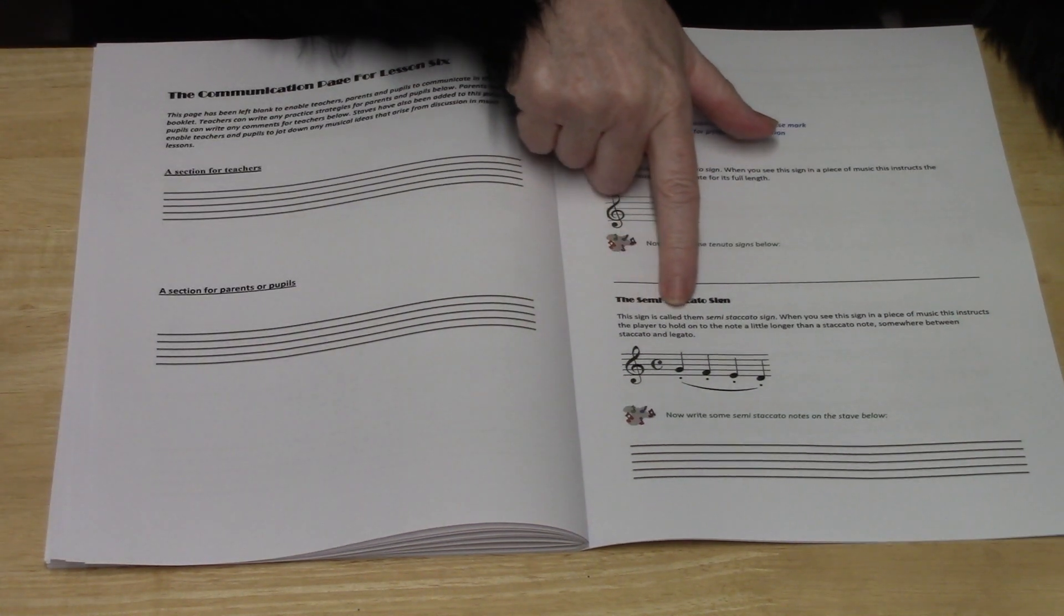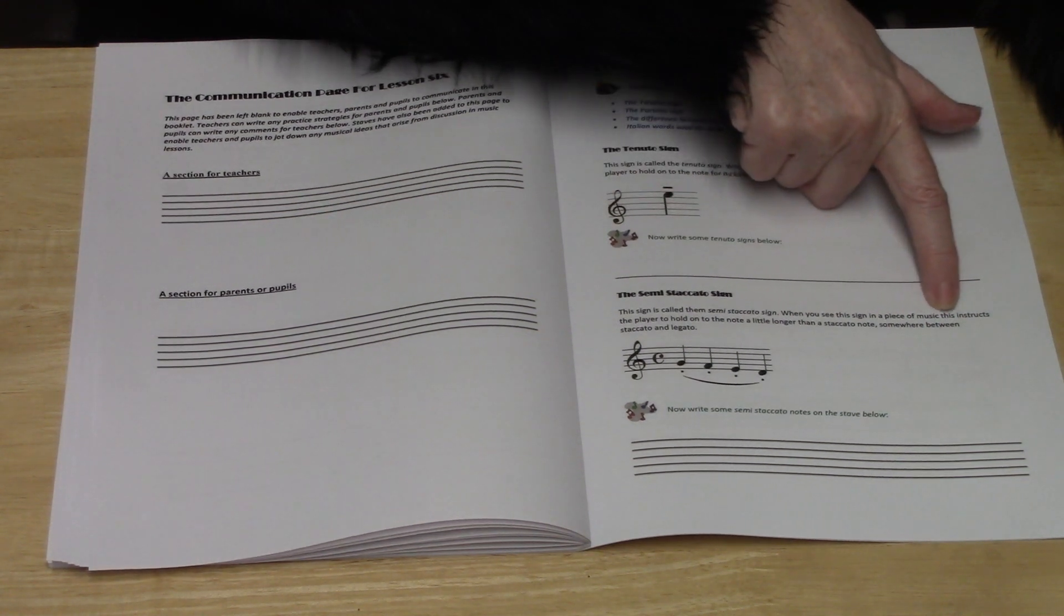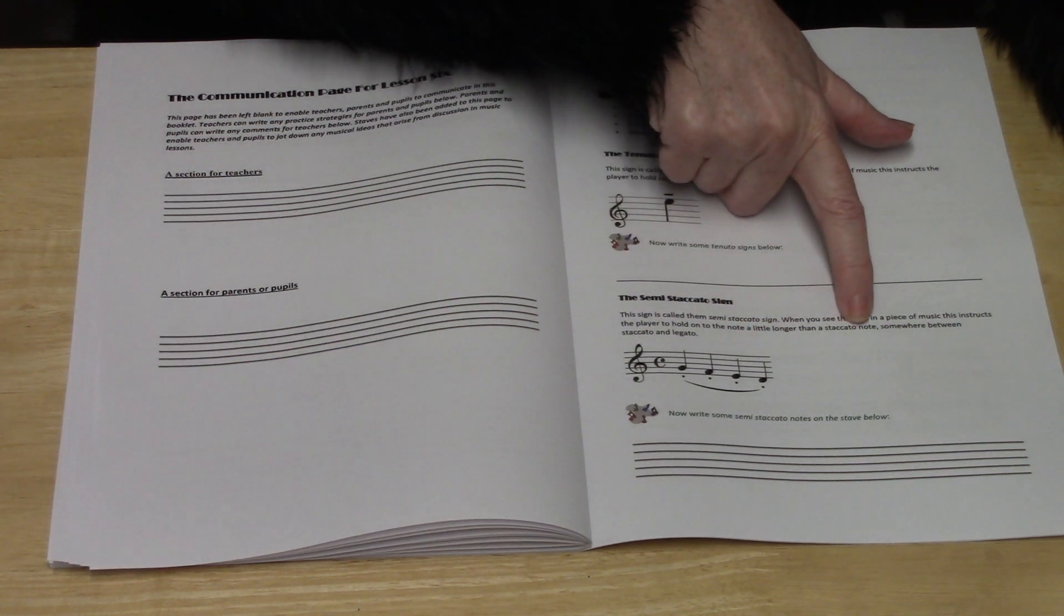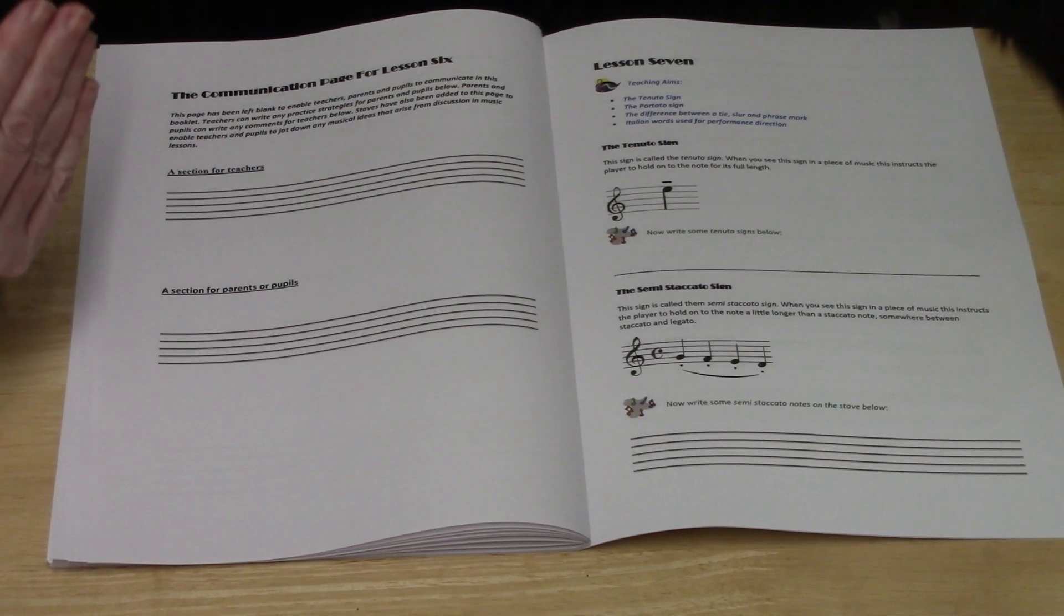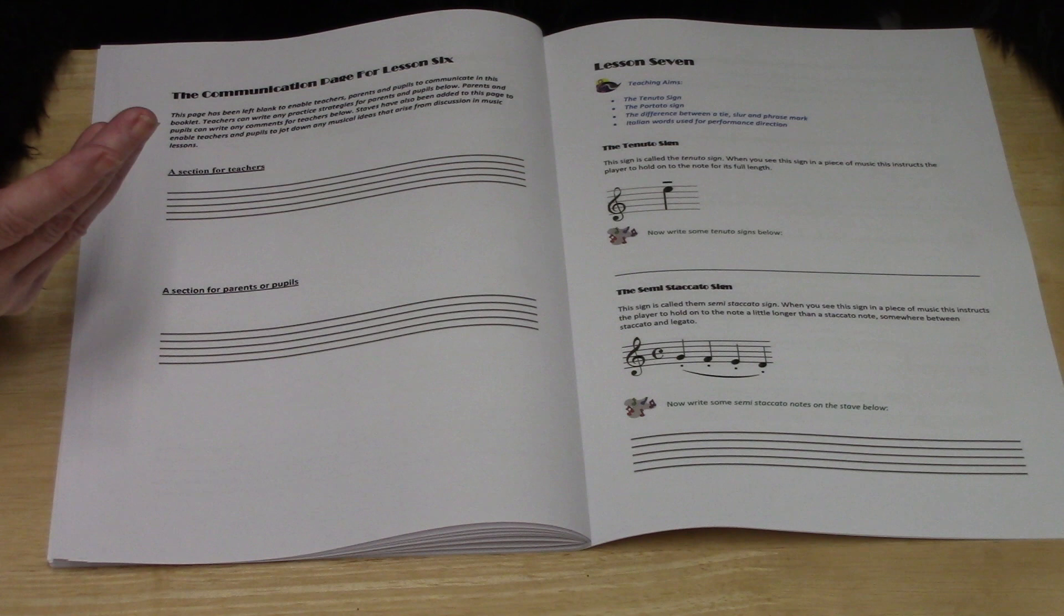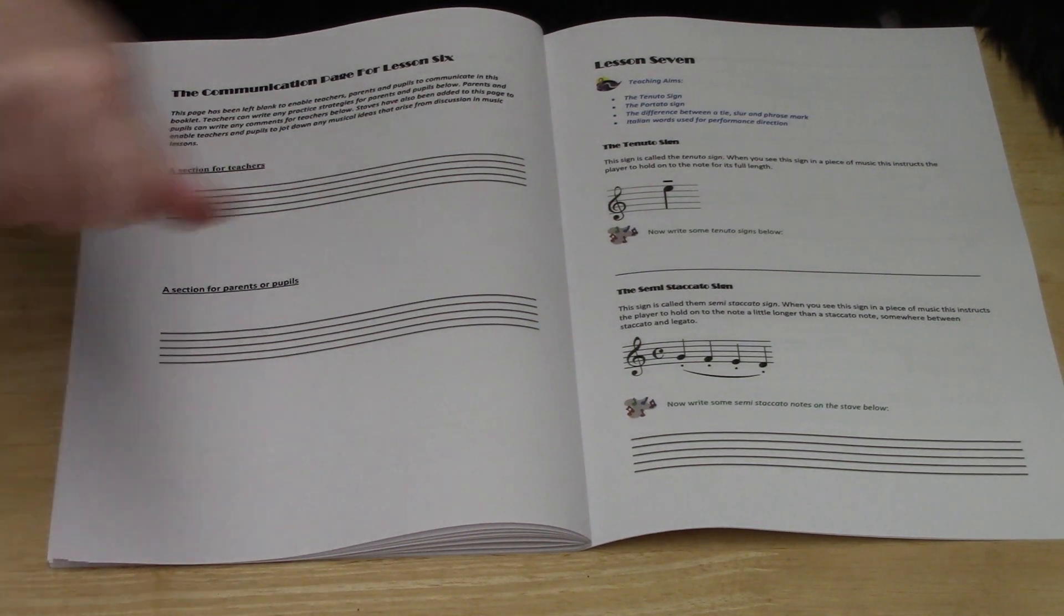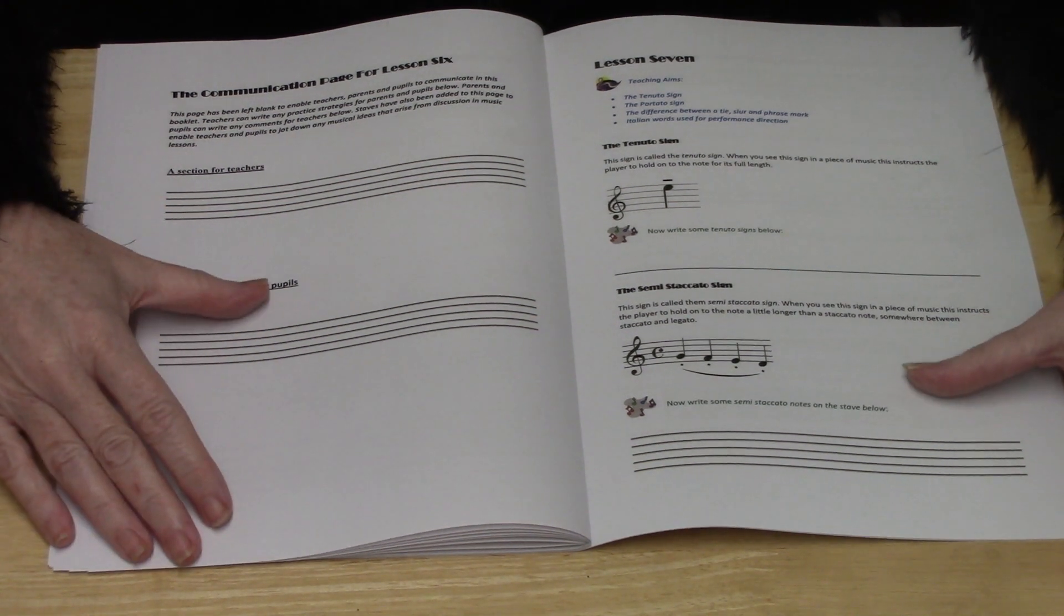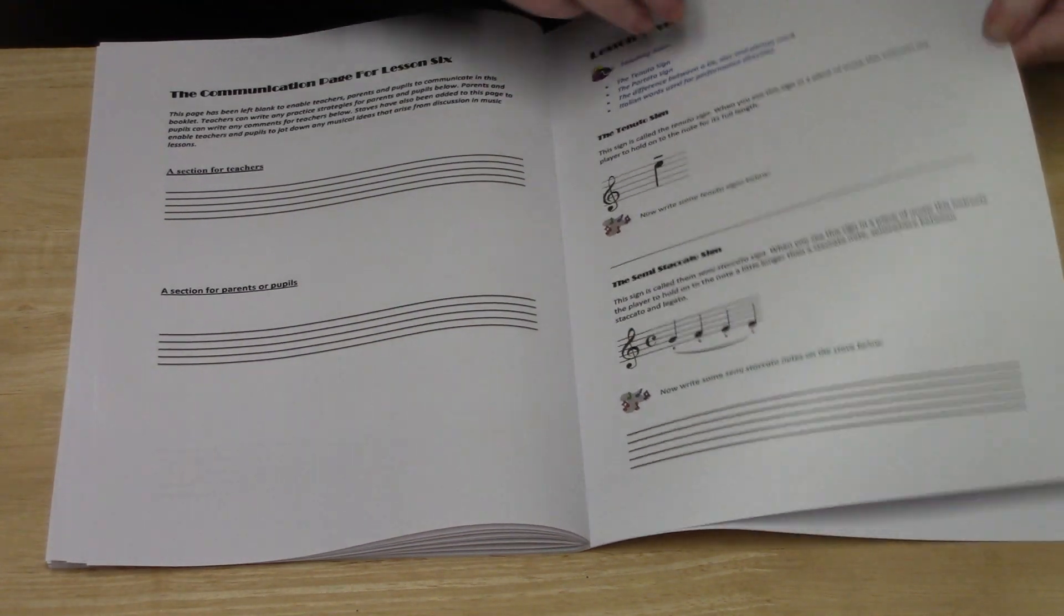This sign is called the semi-staccato sign. When you see this in a piece of music, it instructs the player to hold on to the note a little bit longer than a staccato note, somewhere between staccatos and legatos. Just visualize a violinist bowing this, doing four bows in a row all in a down bow or all in an up bow, and you get the idea of what this semi-staccato is all about. Then you're asked to write a few of these on the stave below.